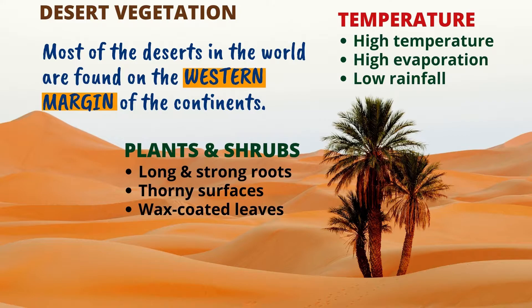What kind of temperature is good for desert vegetation? High temperature, high evaporation, and low rainfall. How are the plants and shrubs in deserts? They have long and strong roots, thorny surfaces, and wax-coated leaves.